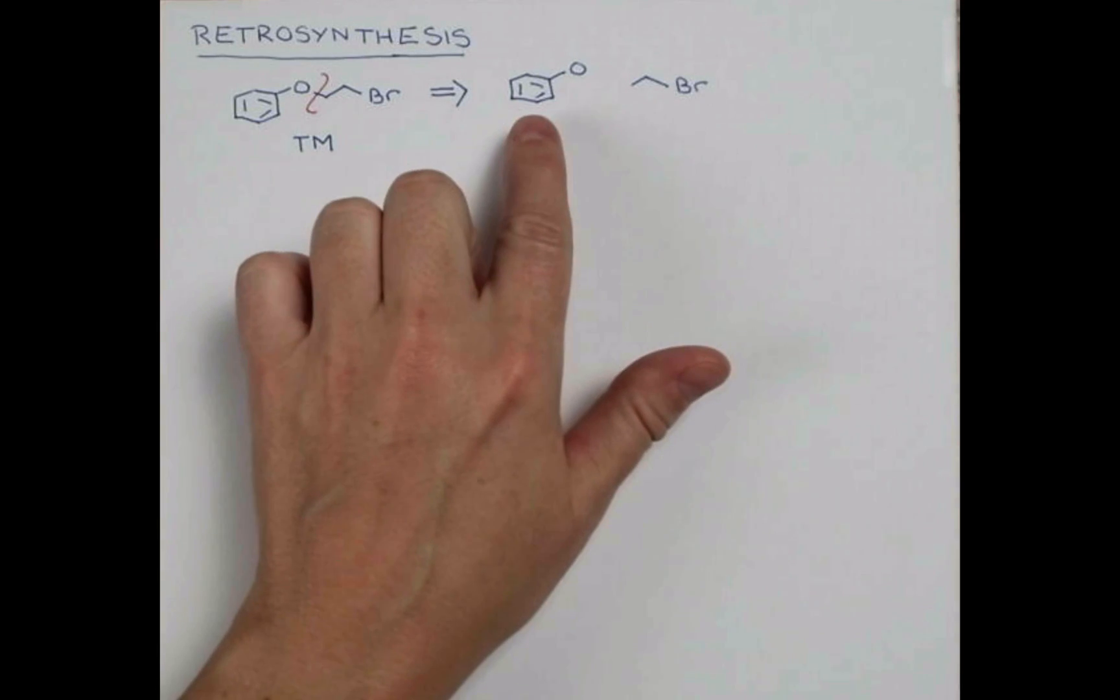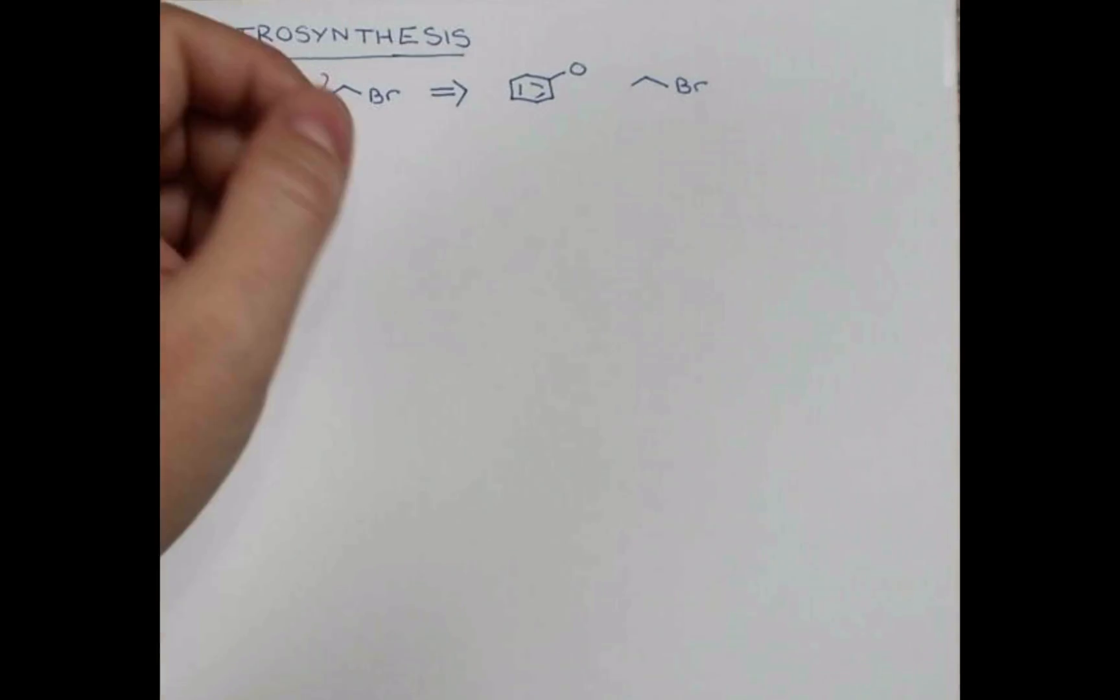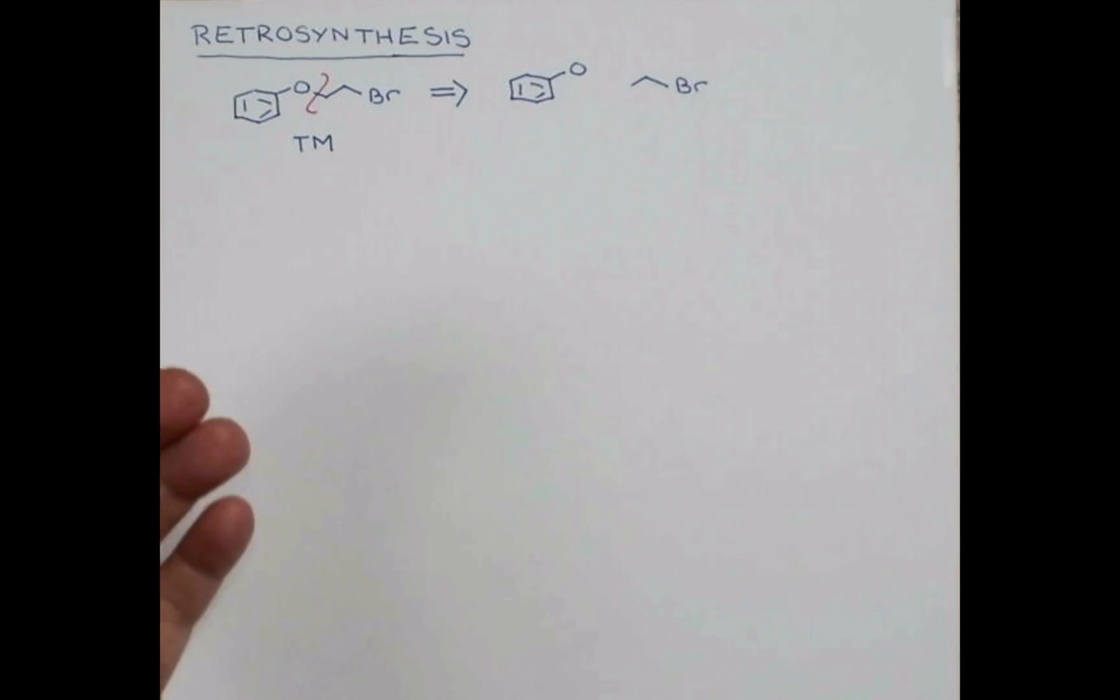Now we need to think about the polarity that each of these partners will have, assuming that we have a polar reaction that's going to happen to form this. We're forming an ether, and you might remember there's the Williamson etherification reaction that allows us to form ethers. I'm going to assign polarity, but I'm going to do it in the wrong way just to show you and then we'll do it the correct way.